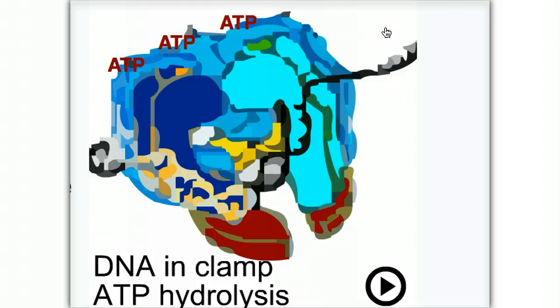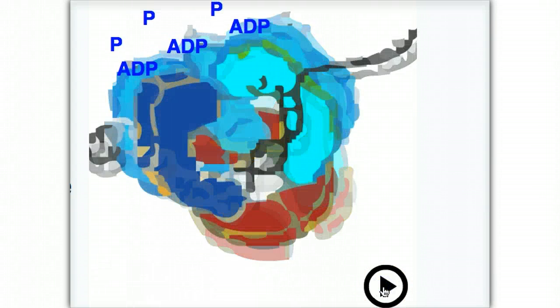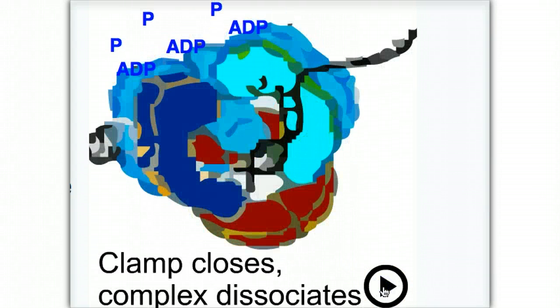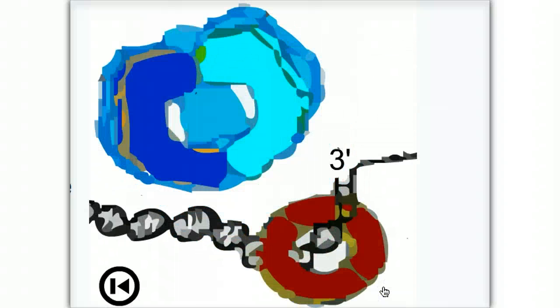The clamp loader and the open clamp can then interact with unraveled DNA associated with origins of replication. This interaction leads to the hydrolysis of the ATP bound to the clamp loader and the closing of the clamp around the DNA. The clamp loader is released and the DNA clamp complex can interact with DNA polymerase and slide along the DNA.